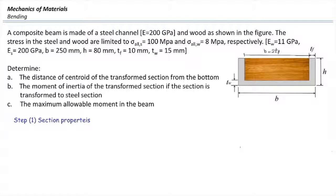For solving this problem, we first need to determine section properties for the transformed section, including the location of the centroid and the moment of inertia. We have two options: we can convert wood to steel or steel to wood. In this case, I'm going to transform wood to steel because we have just one wood part and we need to replace it with a smaller steel part to be equivalent to wood, similar to the previous problem.